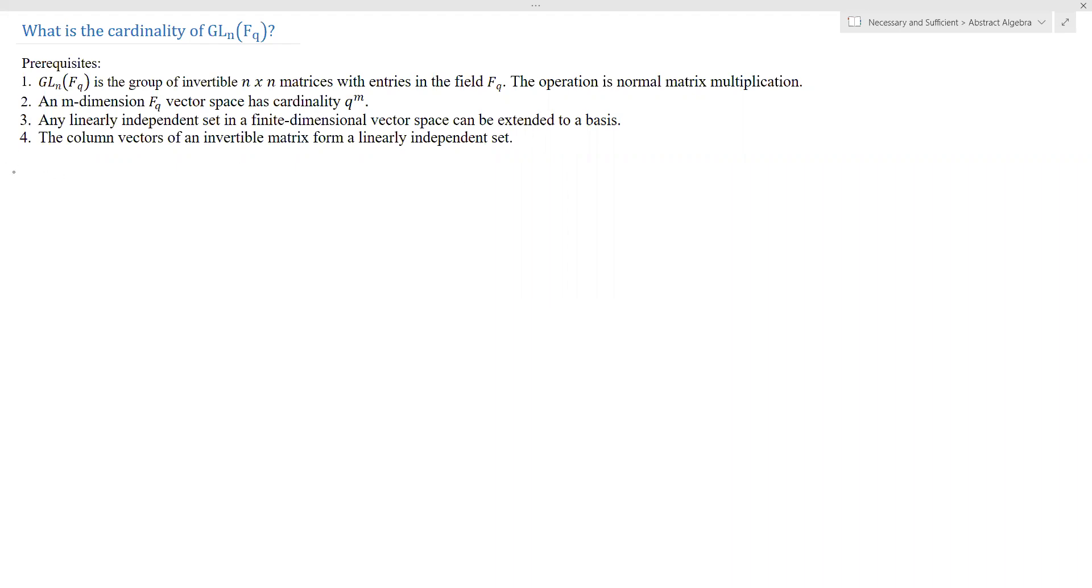So what's the proof? Let's start by considering some arbitrary matrix in GLN over FQ. So consider M arbitrary. So again, this is an n by n invertible matrix. So then we can think of M as columns being made of vectors in FQ to the n.